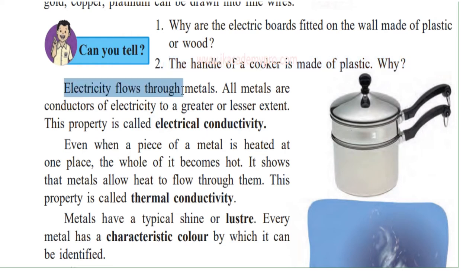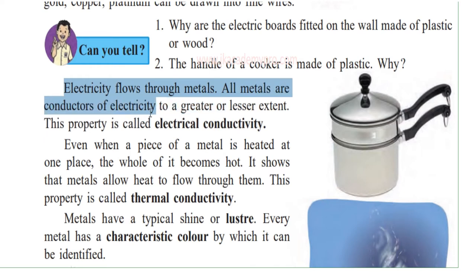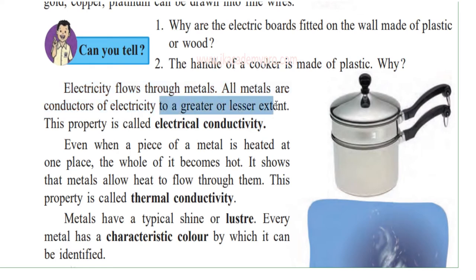Electricity flows through metals — all metals are conductors of electricity, that is, they pass electricity through them. This is called conductors of electricity, to a greater or lesser extent. Some metals will pass electricity to a greater extent and some to a lesser extent.